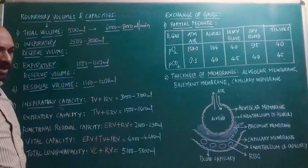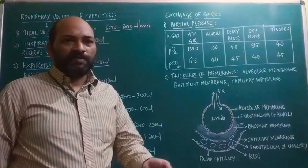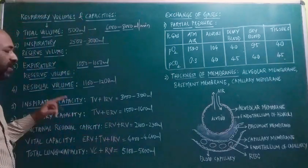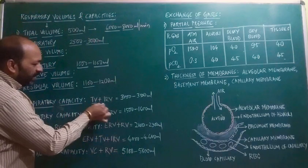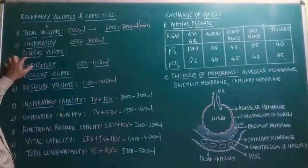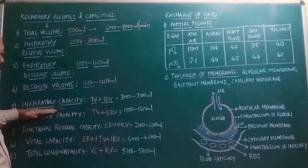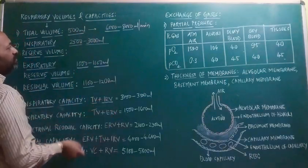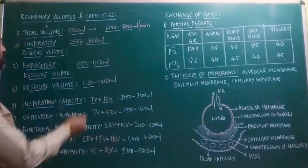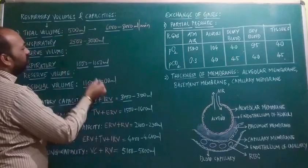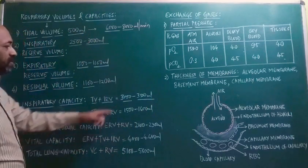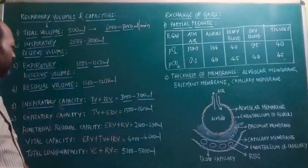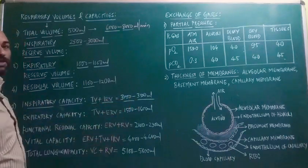Inspiratory capacity is the total volume of air a person inhales after a normal expiration. It is calculated by adding tidal volume (TV = 500 ml) and inspiratory reserve volume (IRV = 2,500 to 3,000 ml). So 2,500 + 500 = 3,000 and 3,000 + 500 = 3,500. Inspiratory capacity is 3,000 to 3,500 ml.